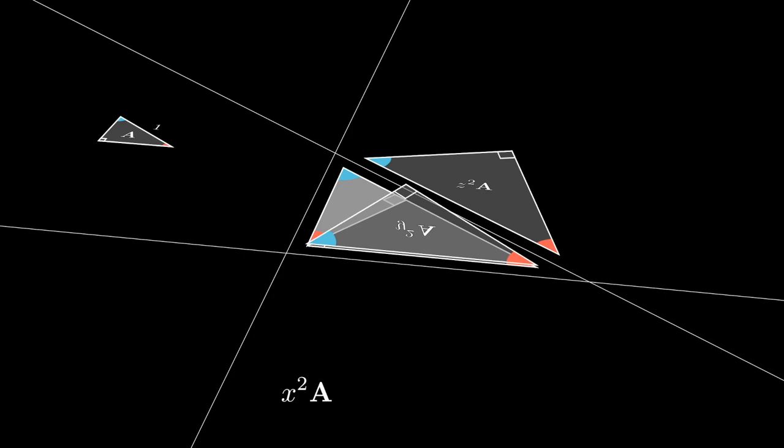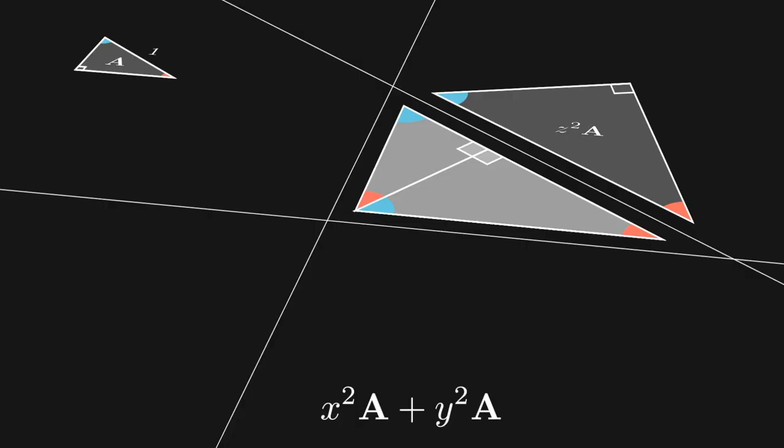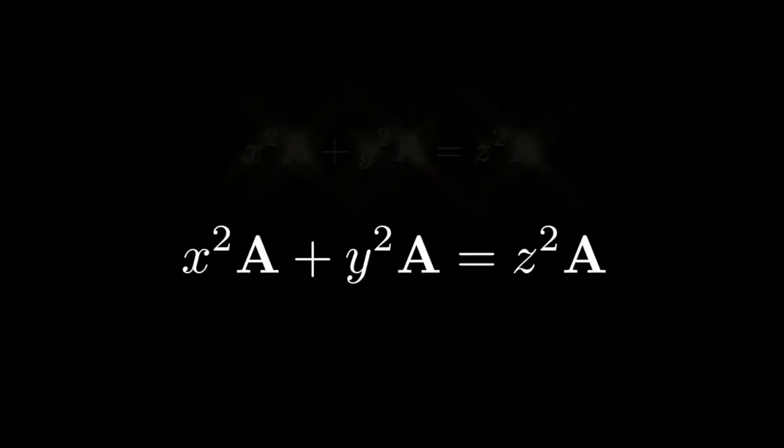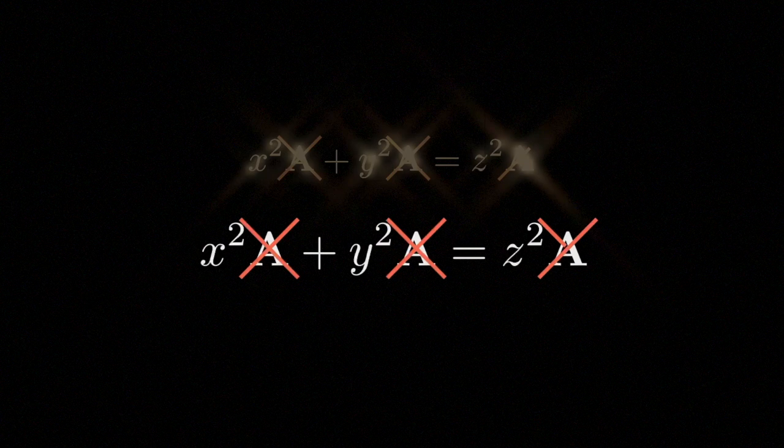All of which means that X squared A plus Y squared A is equal to Z squared A. Dividing through by A, we arrive at the very fact that made these triangles epic to begin with. We arrive at the Pythagorean Theorem.